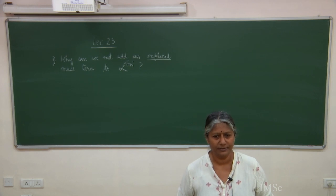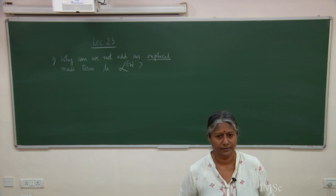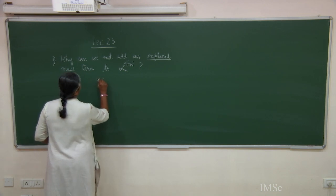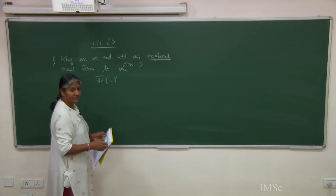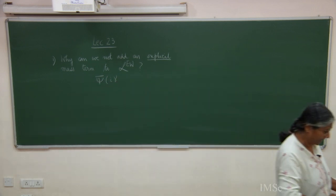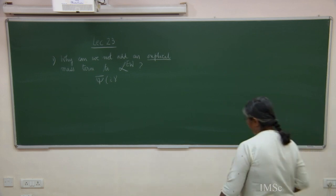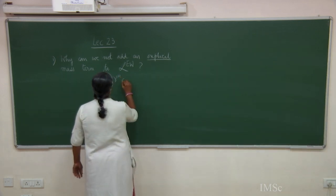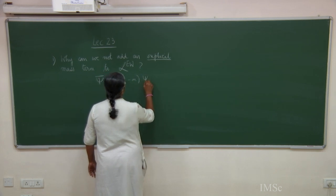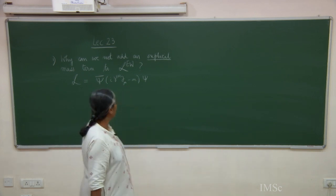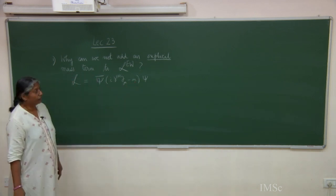Does anyone remember the answer or want to take a guess? The Lagrangian would not be invariant — very nice. Let me write it down. This is the Lagrangian for the Dirac field. If you write the current for SU(2), there are three SU(2) currents: J_mu^A equals psi-bar gamma_mu sigma_A psi.